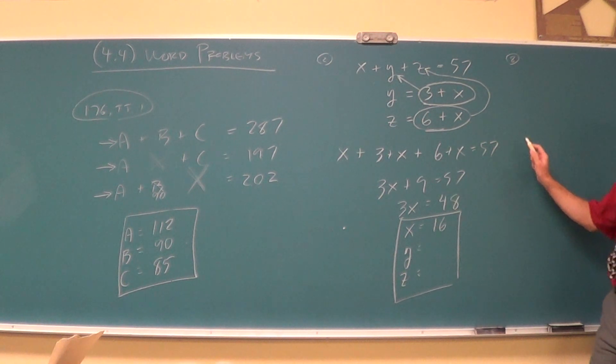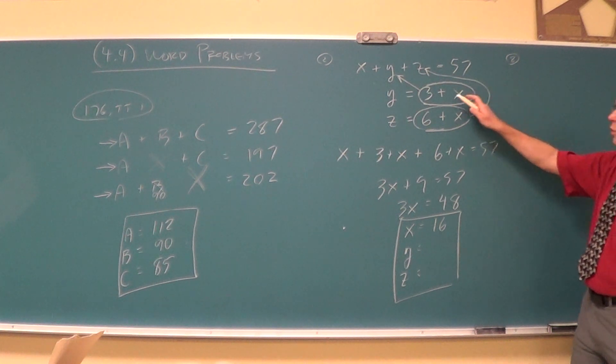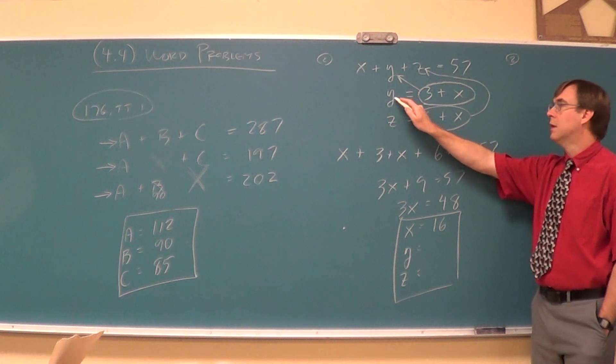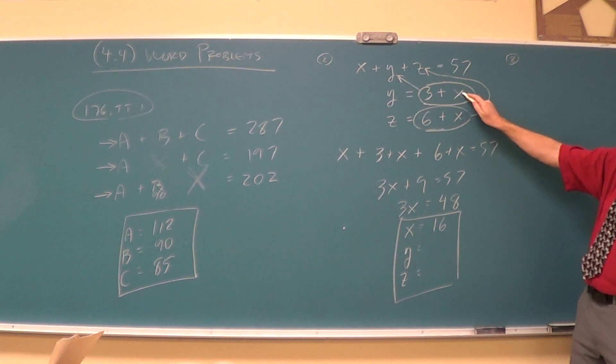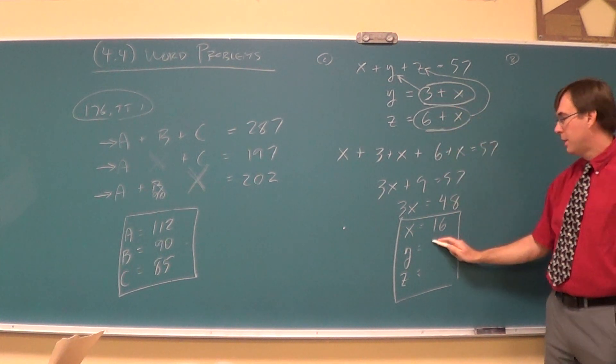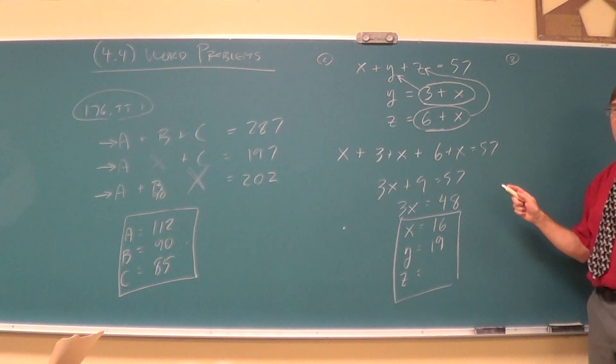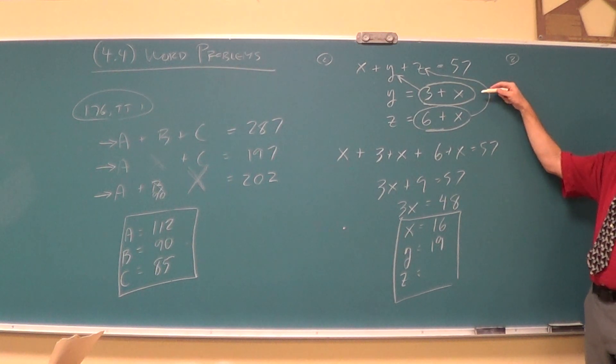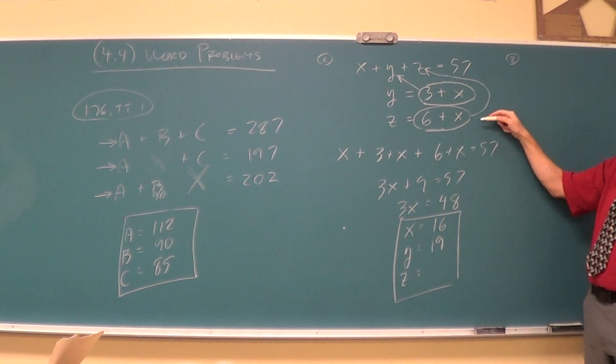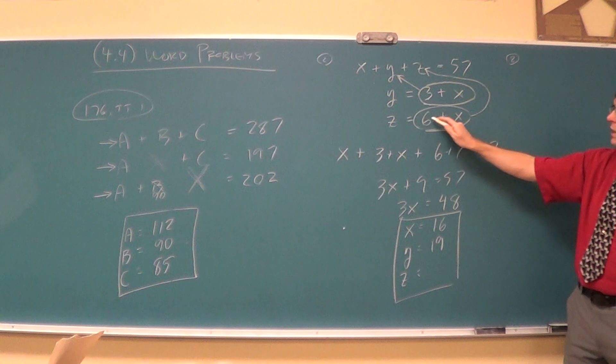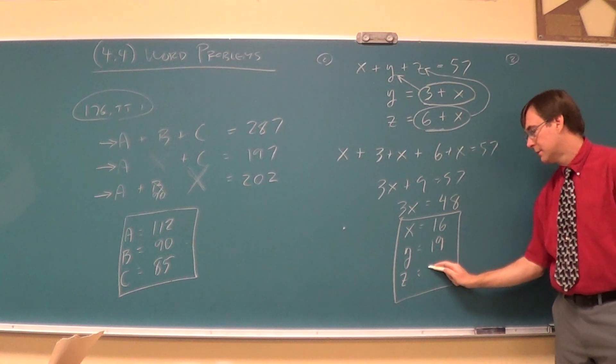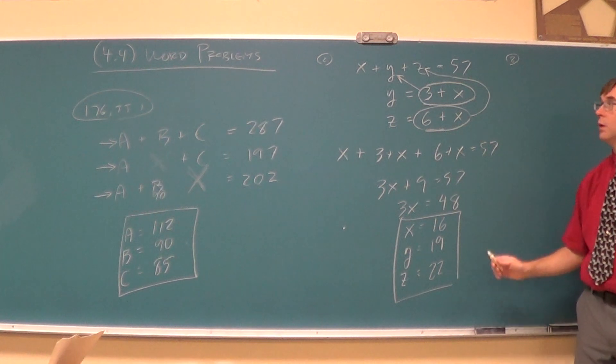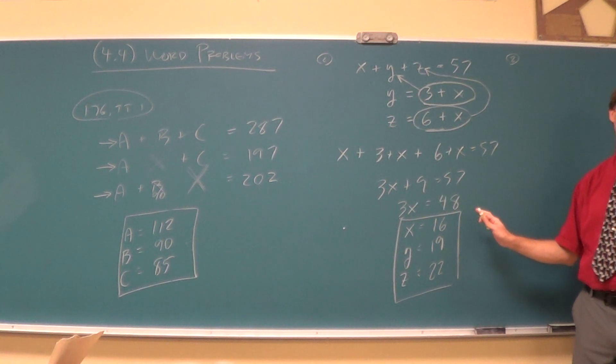Where are we going to get the Y from? Plug it in. This is here to give us Y's. The Y is 3 more than the X. So once we know the X is 16, the Y's got to be 19. And to get the Z, same thing. This is ready to give you Z. 6 more than X. So 6 more than the X is 22.